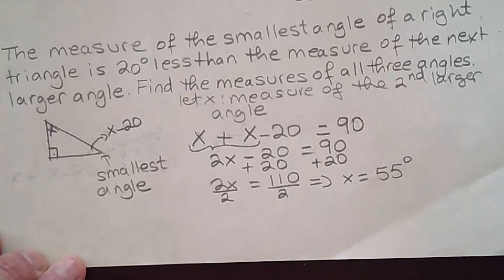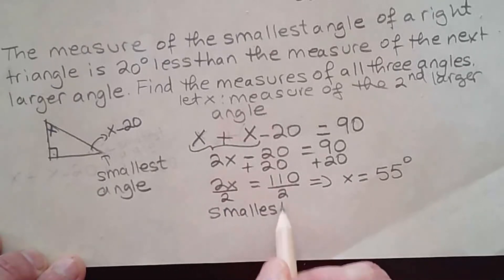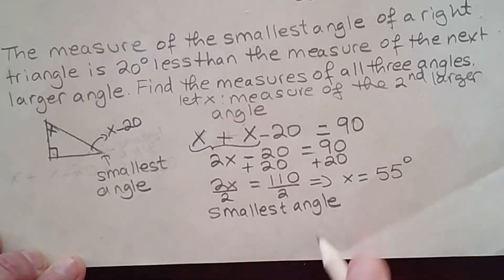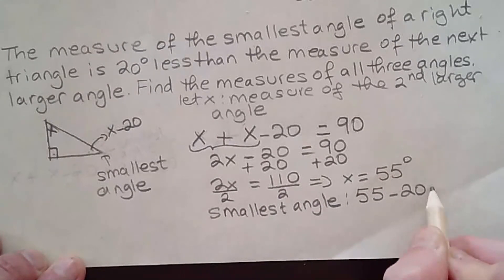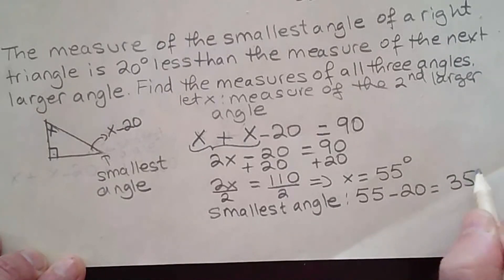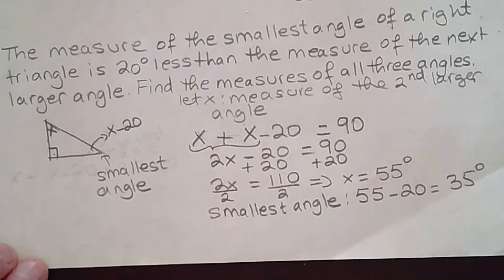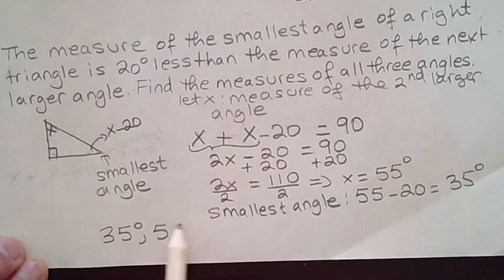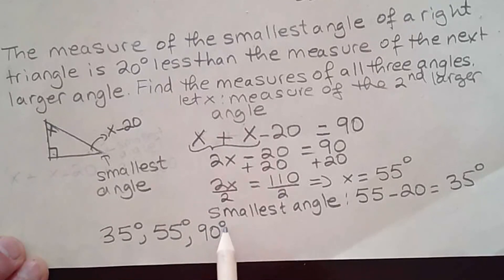So 55 degrees is the second largest angle. The smallest angle is 20 degrees less, which means 55 minus 20, and that gives me 35 degrees. So the measures of all three angles are: the smallest angle is 35 degrees, the second angle is 55 degrees, and the third is the right angle which is 90 degrees.